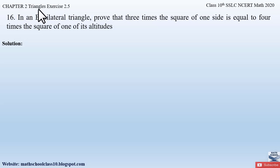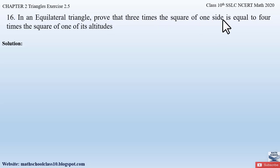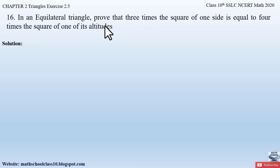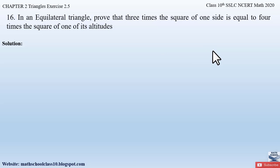Question number 16 from exercise 2.5, chapter 2 Triangles says: in an equilateral triangle, prove that three times the square of one side is equal to four times the square of one of its altitudes. Here they have not given us the figure, so let us first draw the figure.